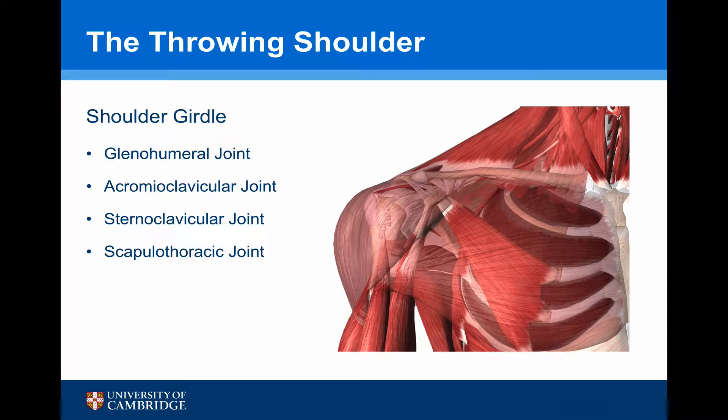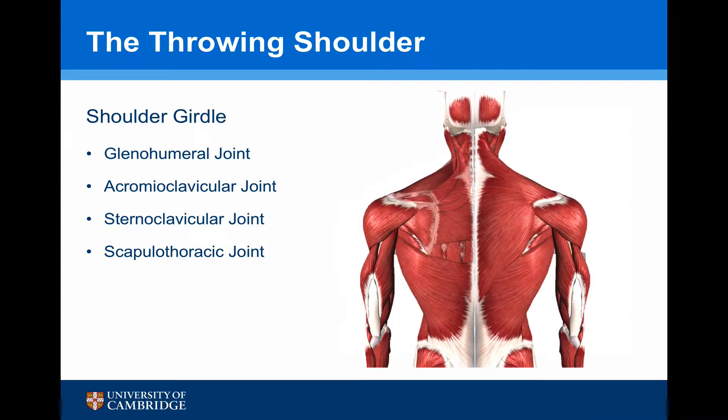We need to look initially at at least the whole shoulder girdle. This includes the acromioclavicular joint, the sternoclavicular joint, and importantly, the scapulothoracic joint.